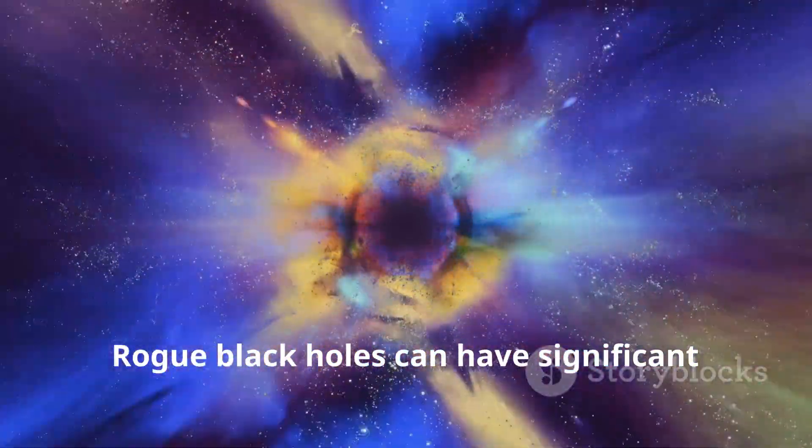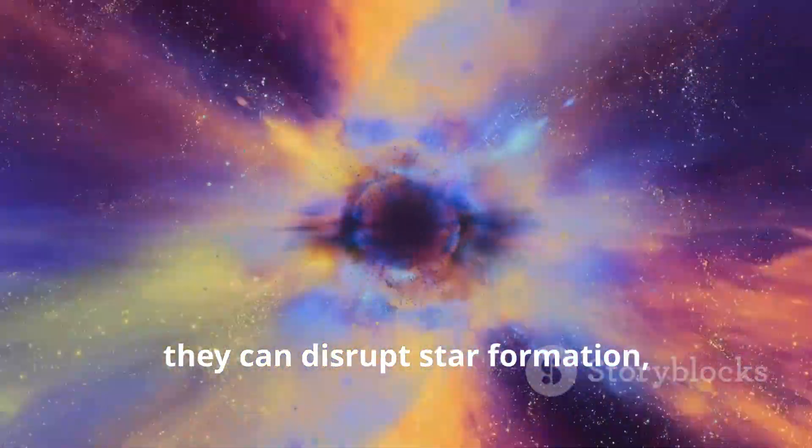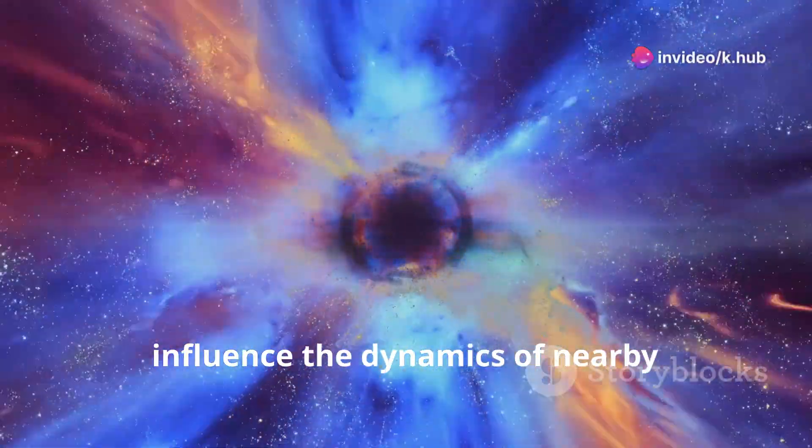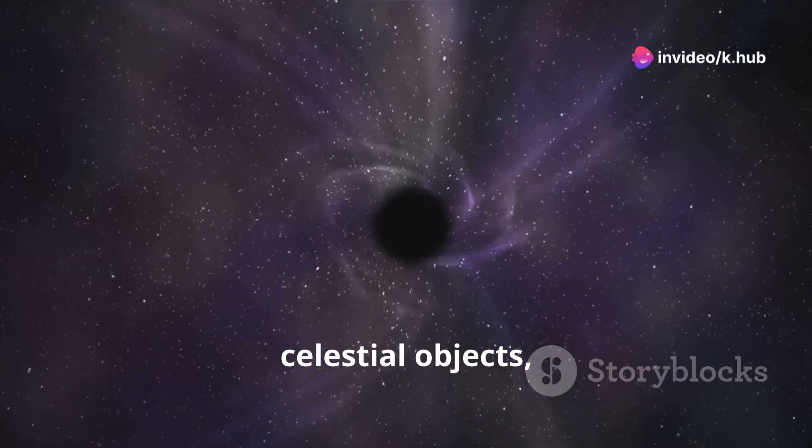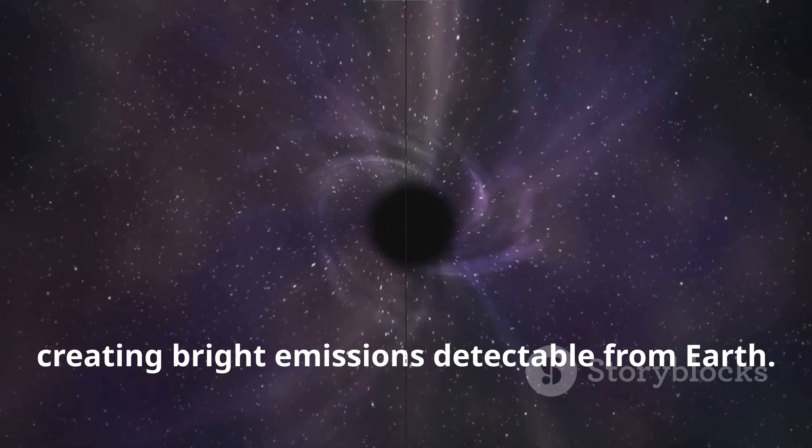Rogue black holes can have significant effects on their surroundings. As they travel through space, they can disrupt star formation, influence the dynamics of nearby celestial objects, and even consume matter, creating bright emissions detectable from Earth.